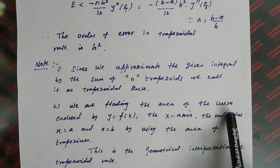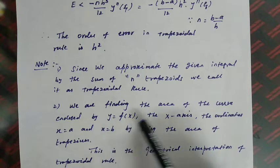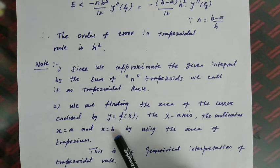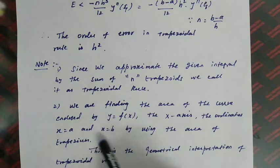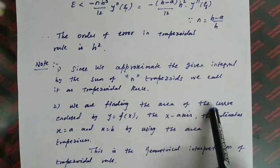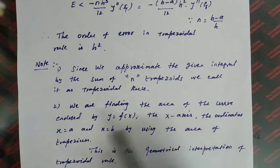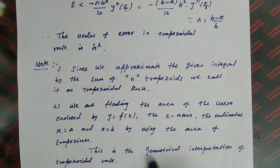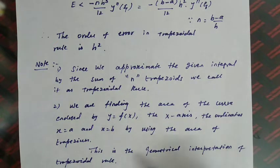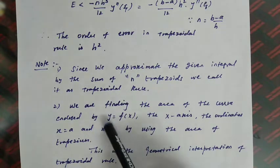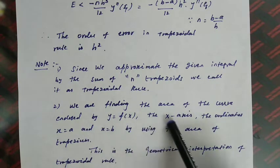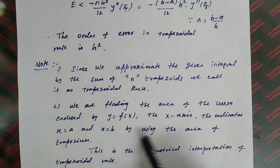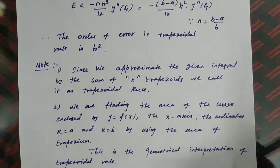Note 2 says that we are finding the area of the curve enclosed by y = f(x), the x-axis, and the ordinates x = a and x = b, by using the area of a trapezoid. This is called the geometrical interpretation of the trapezoidal rule. If a question asks to 'explain the geometrical interpretation of the trapezoidal rule,' you answer with this note.